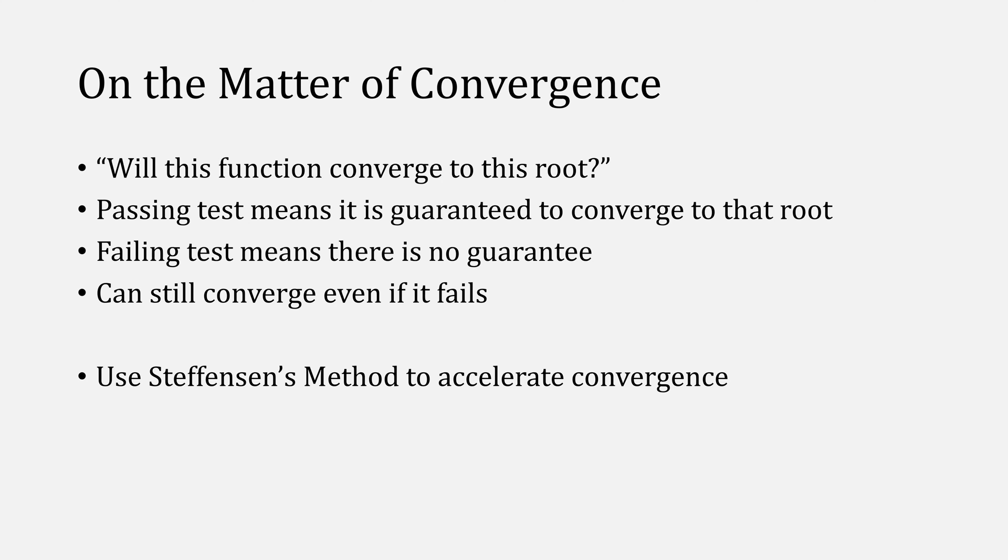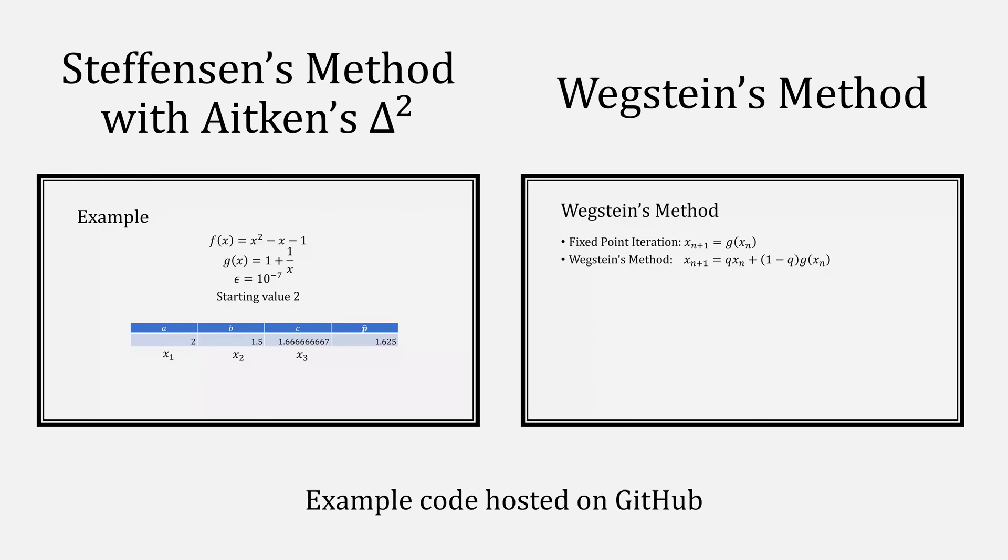If it's converging too slowly, you might consider applying Stephenson's method to speed it up, or you can use Wegstein's method and avoid the convergence test altogether. Stephenson's method and Wegstein's method are both ways of accelerating convergence of fixed-point iteration, and in the case of Wegstein, can actually induce convergence when the function diverges. I have example code for both of these on GitHub.